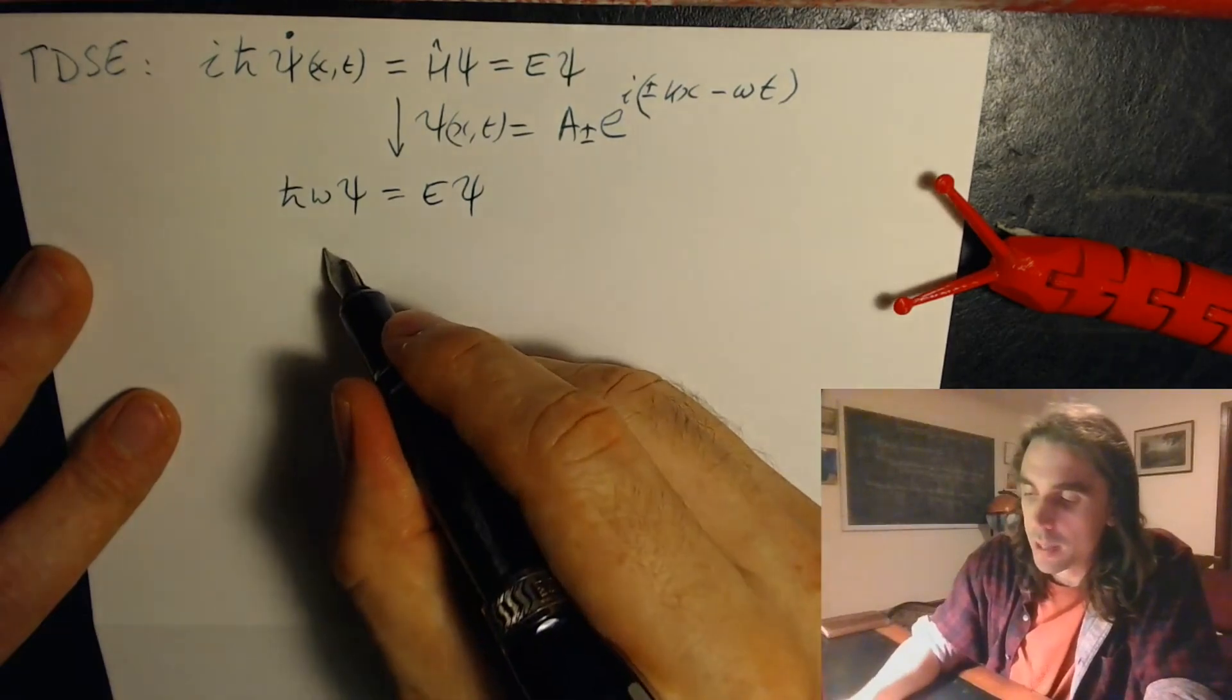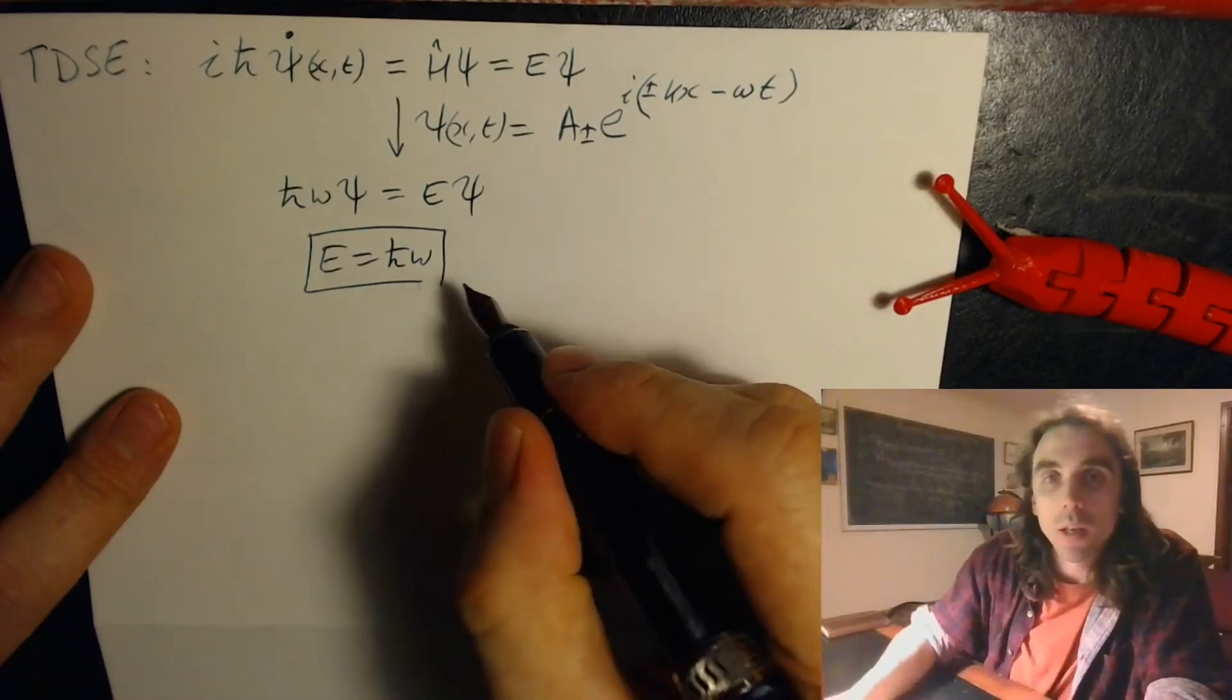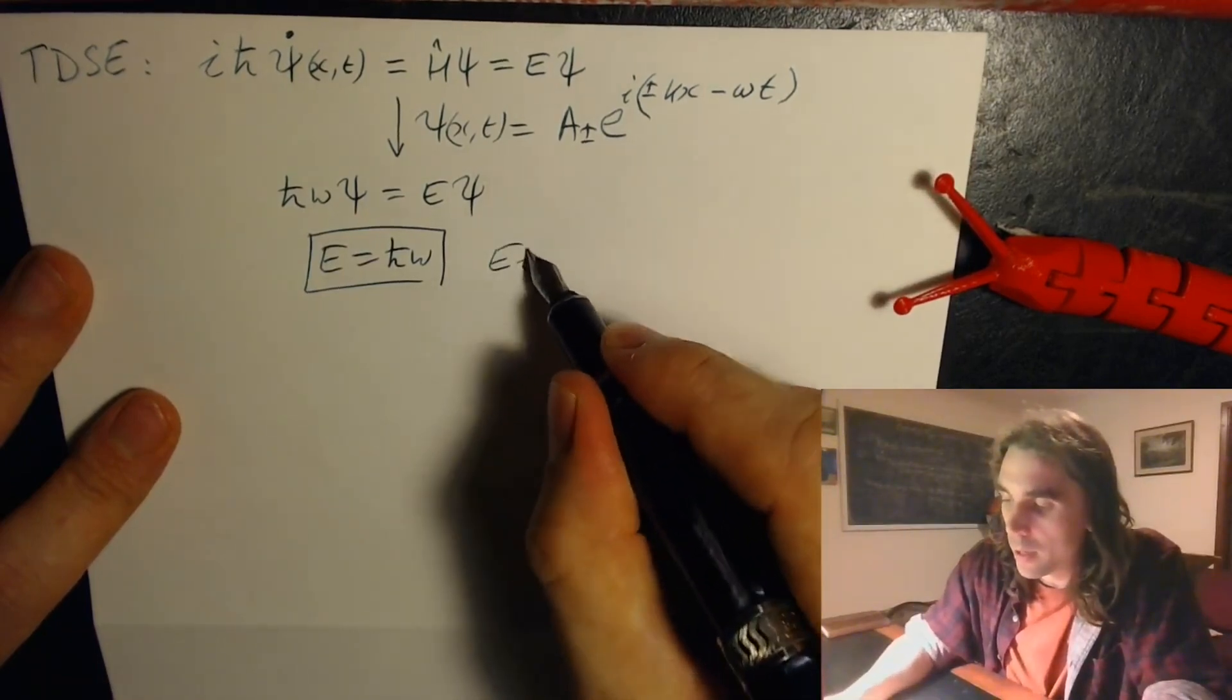Or in other words, e equals h bar omega, which is nothing other than our Einstein relation.